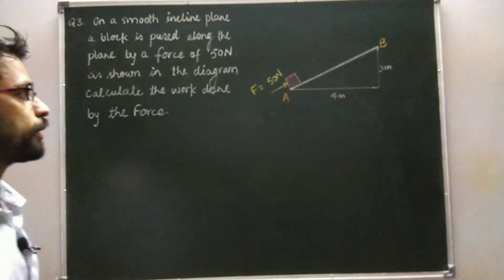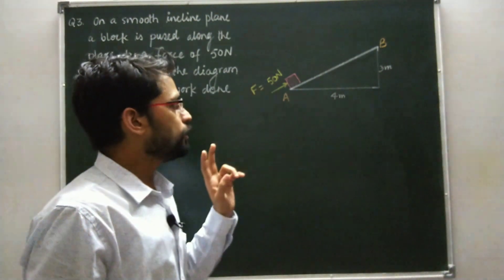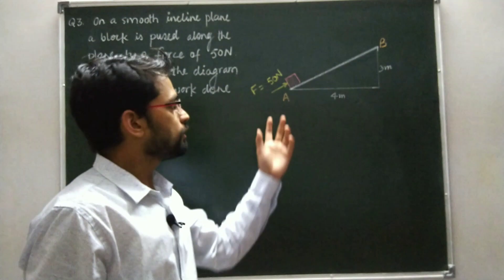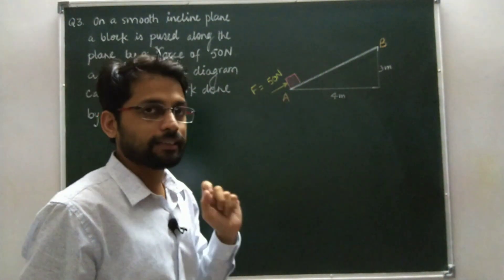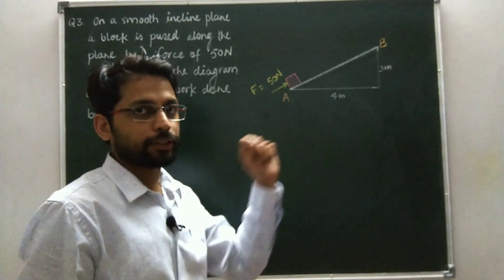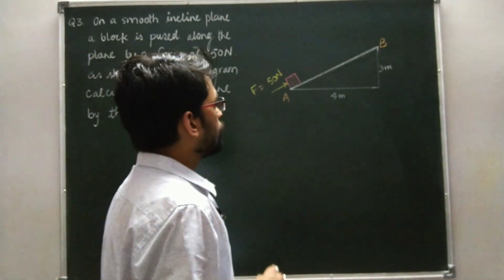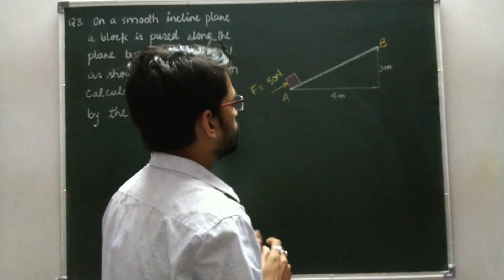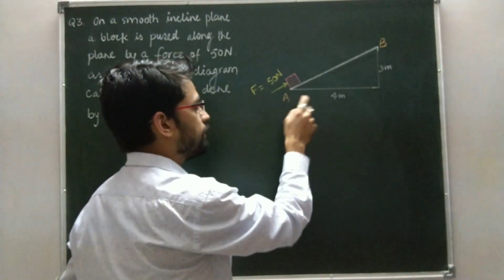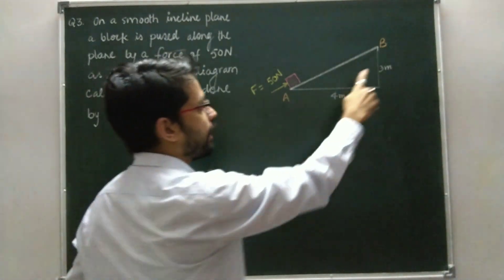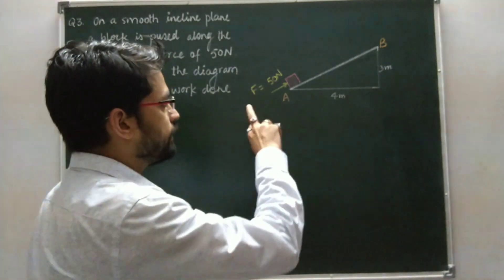For the calculation of work done, we need two quantities: one is the force applied on the body, and the other is the displacement of the body in the direction of force. To find the displacement, we need the initial and final points.